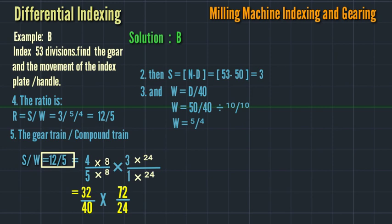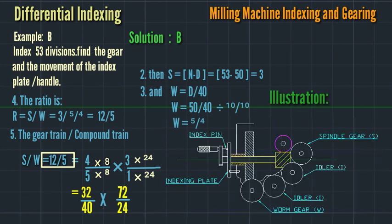This is the illustration, the gearing arrangement of the indexing head. On the spindle gear we have 32 gear teeth, first idler 24 teeth, second idler 72 teeth, then worm gear 40 teeth. This is the gearing arrangement.